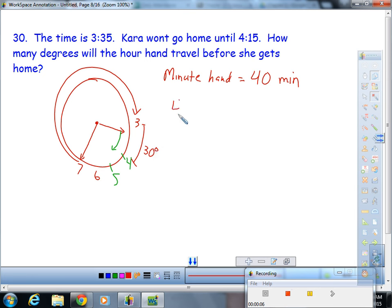I just did a proportion for this. 40 minutes is to x degrees like 60 minutes is to 30 degrees. The hour hand moves 30 degrees for every 60 minutes the minute hand moves. You cross multiply and divide, you get x equals 20 degrees.